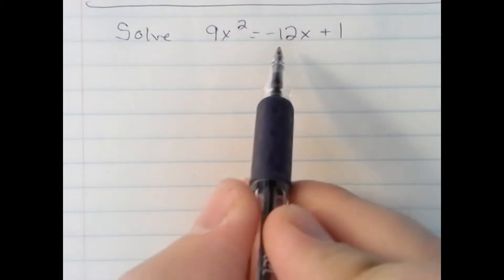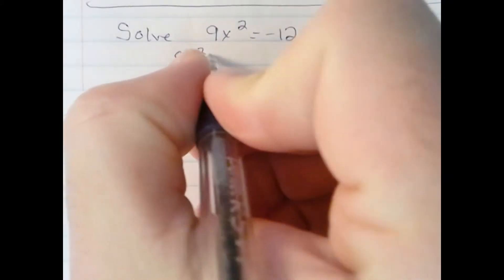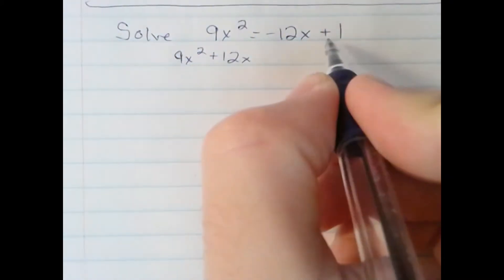I'm going to add 12x to both sides. I'm going to subtract 1 from both sides.